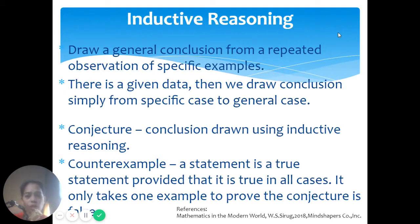Now, when we talk about conclusion, the conclusion drawn using inductive reasoning is what we call conjecture. And we have to remember that there is what we call a counterexample, wherein it's a statement. A statement is a true statement, provided that it is true in all cases. So it means it only takes one example to prove the conjecture is false.